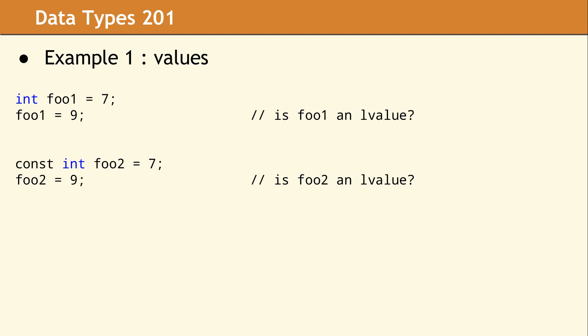So let's take a look at an example. Is foo1 an L value? And is foo2 an L value? The answer is yes. Both foo1 and foo2 are L values. They have a name. They have a location in memory. And you could take the address of them. I'd like to note that foo2 is const. That means it cannot be modified. But it is still an L value. Just because something cannot be modified does not change its value category.